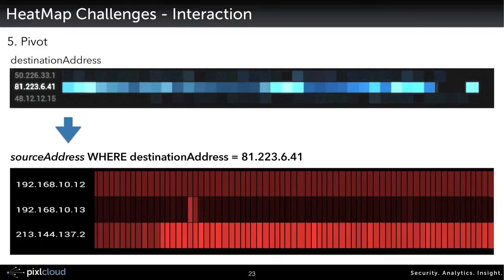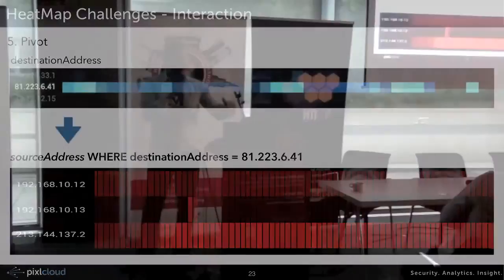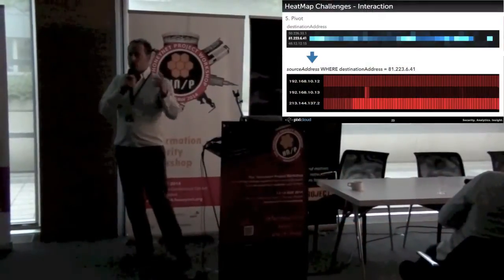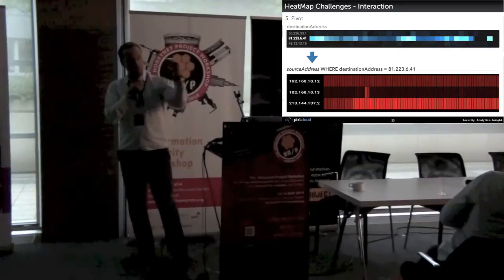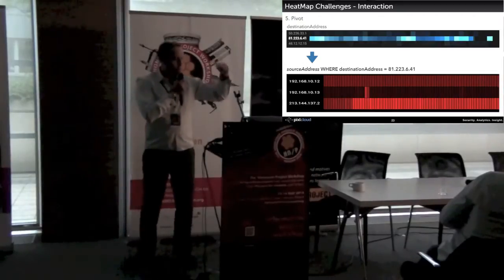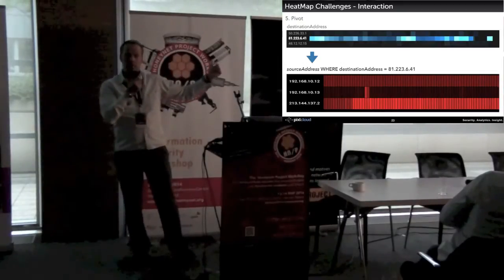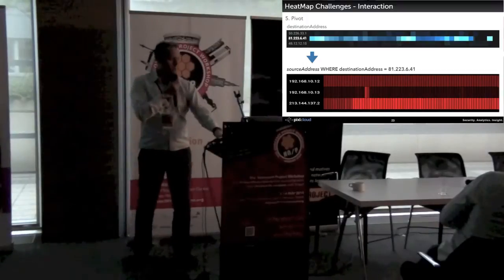Then if I zoom in on one row that looks interesting, I have sort of one-dimensional data over time showing how that entity was active. Now I want to know — if this is the destination address — how does that look across sources? So let me pivot on my data: use that zoom level where I'm at, but now pivot and show me the sources for that. That's another thing I want to enable.